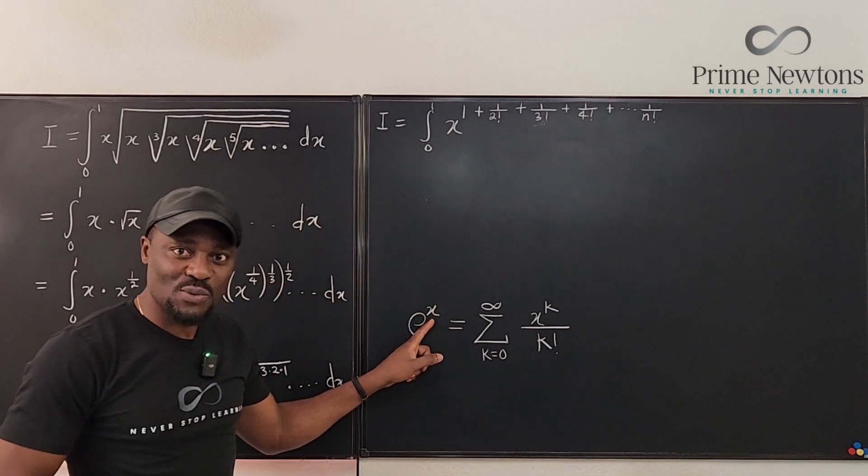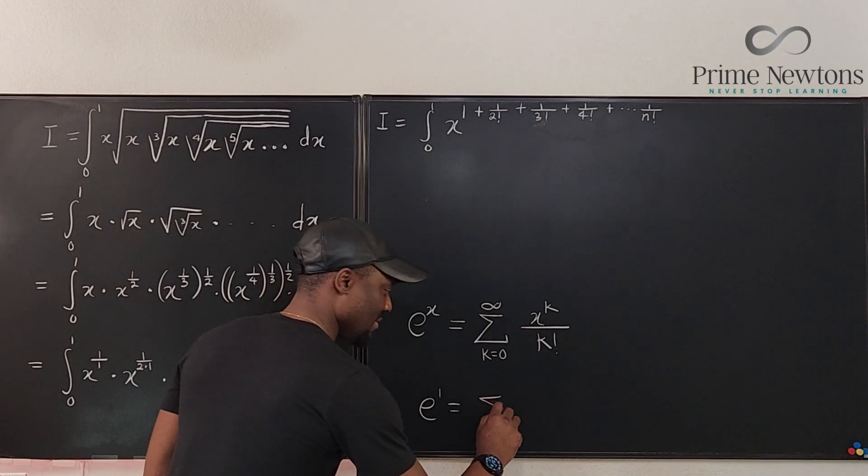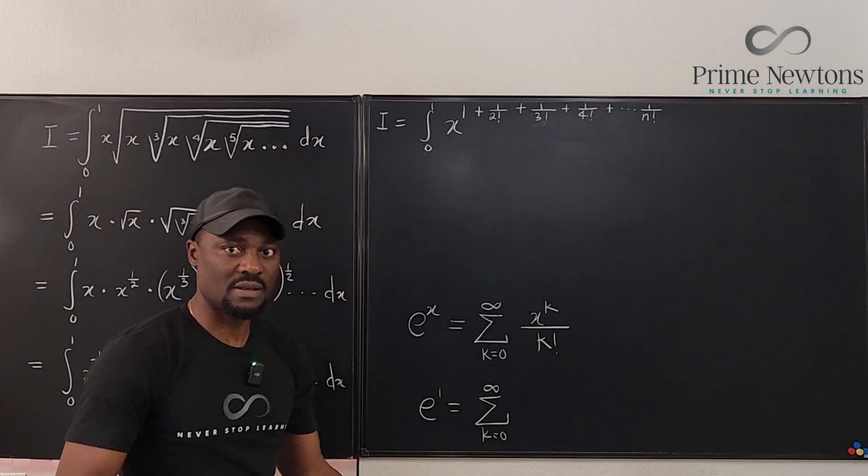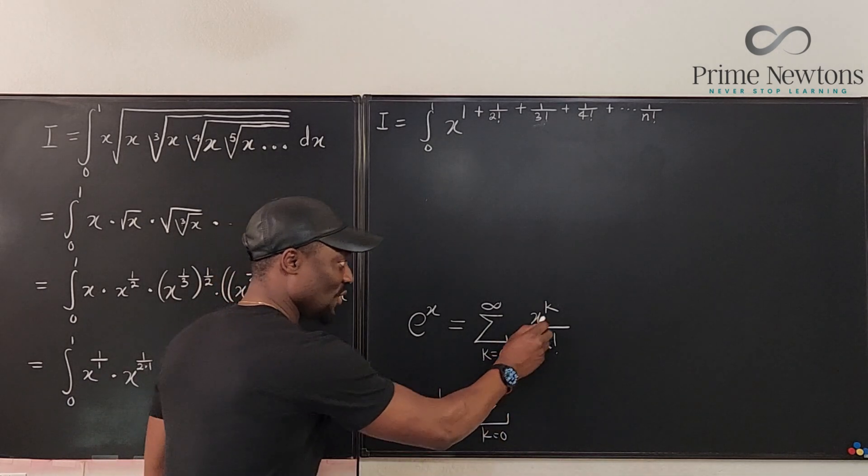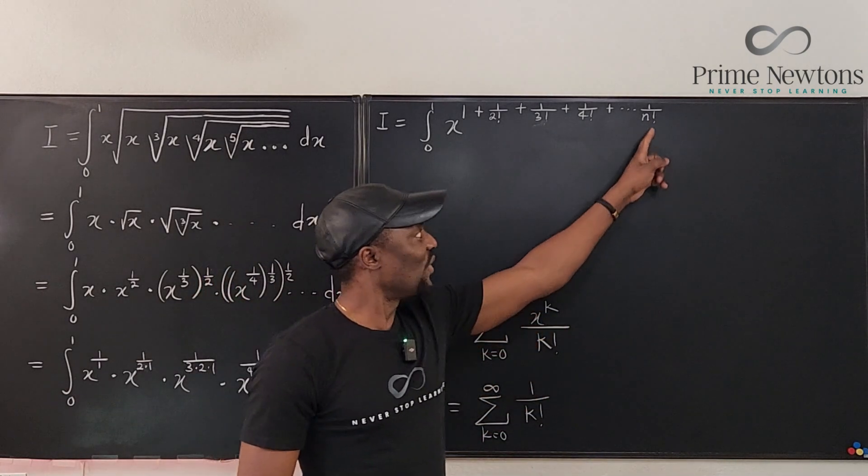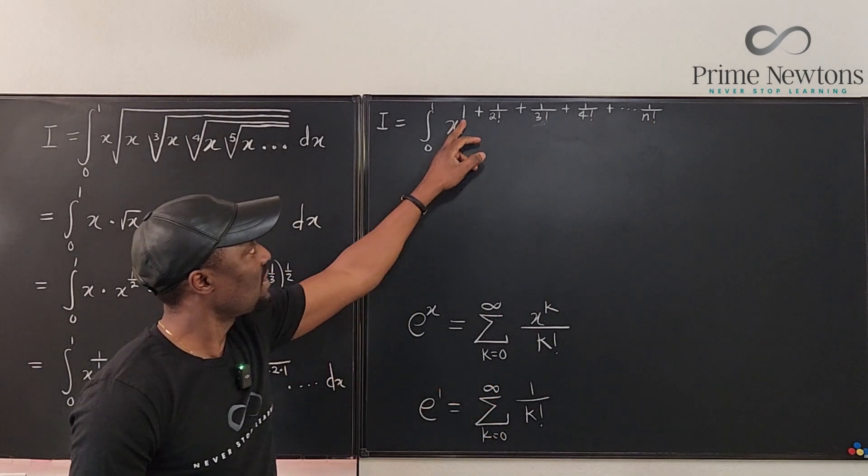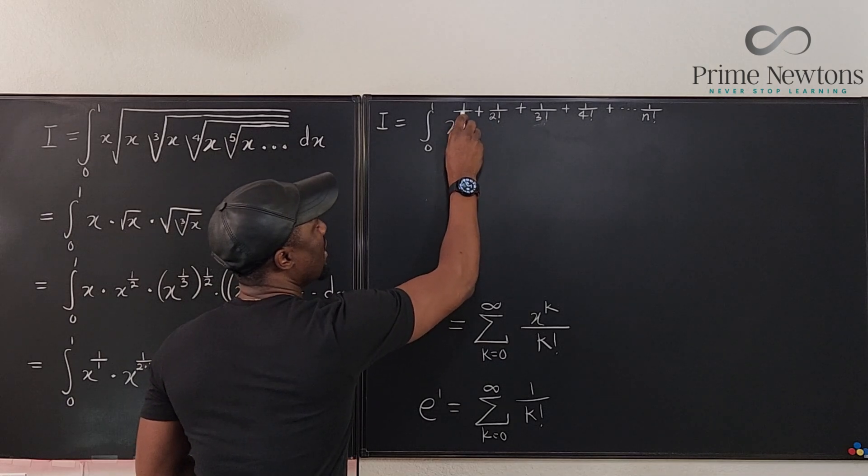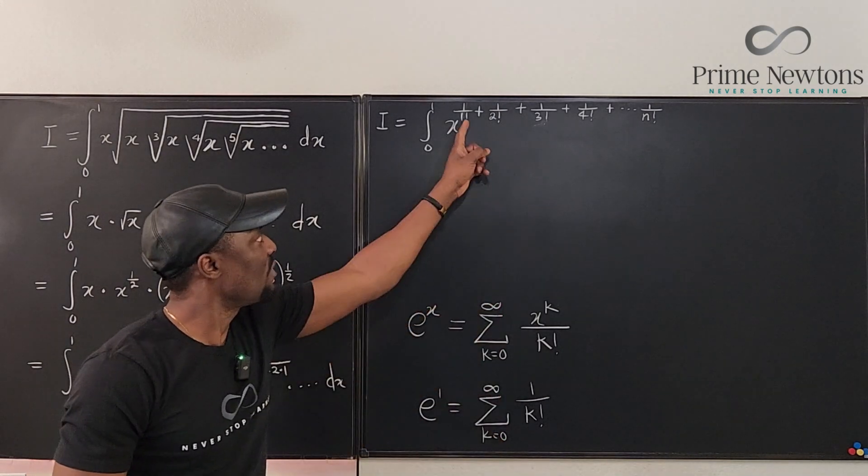Well, let's take a case where our x equals one. e raised to power one is going to be the sum from k equals zero to infinity of one raised to power k. Now one raised to any power is one. So this is just going to be one over k factorial. Well, this clearly looks like this. So this sum starts from zero. Unfortunately, our sum here starts from one. This one can be written as one over one factorial. So it's as if we're not starting from zero here, we started from one.